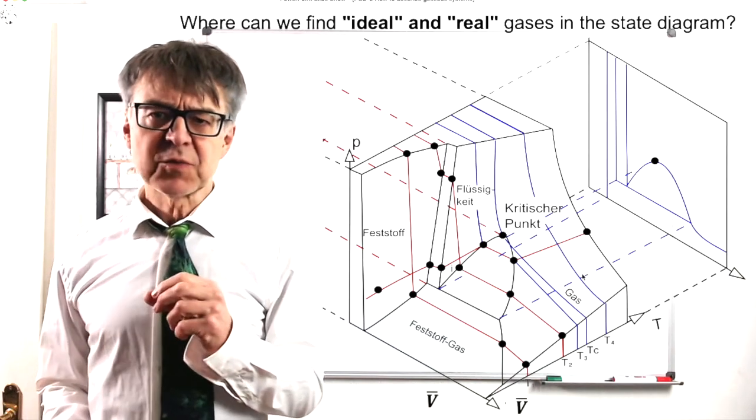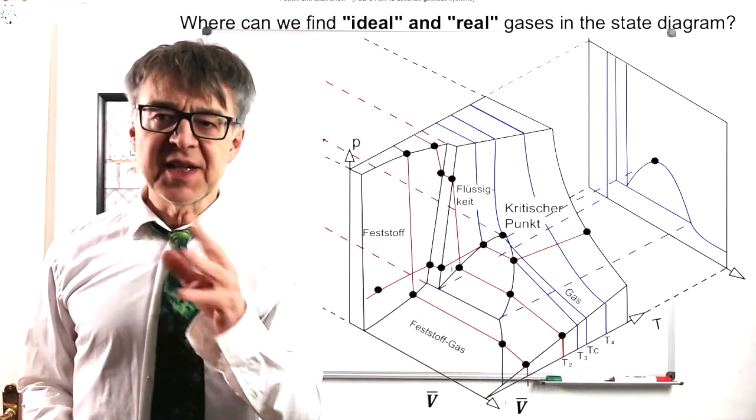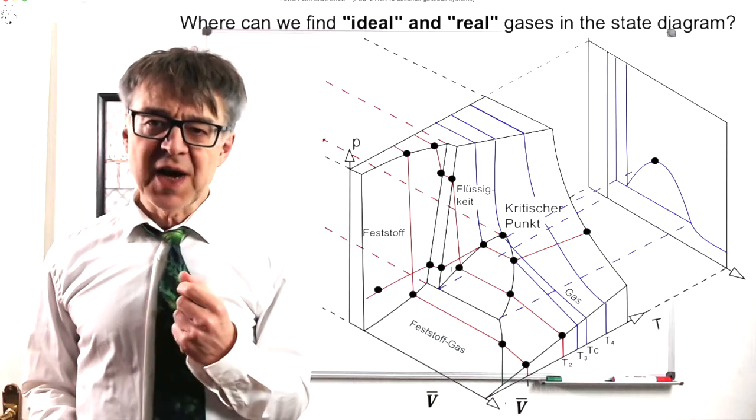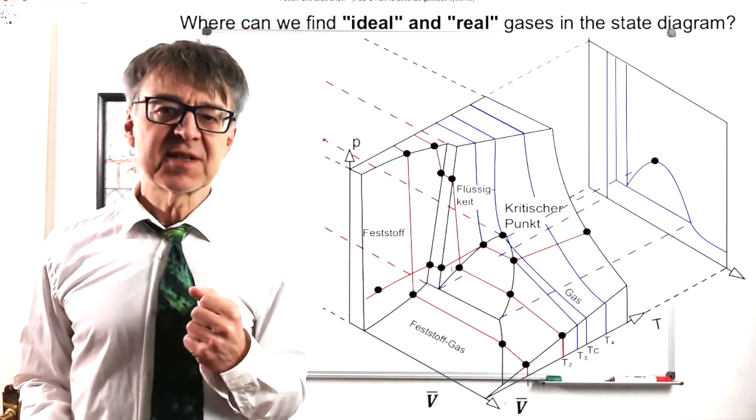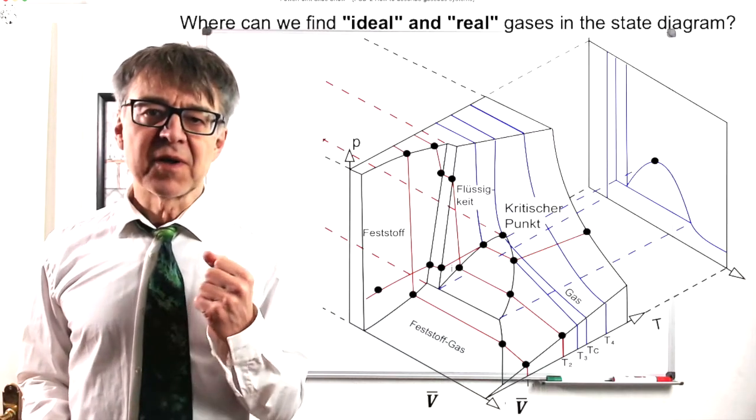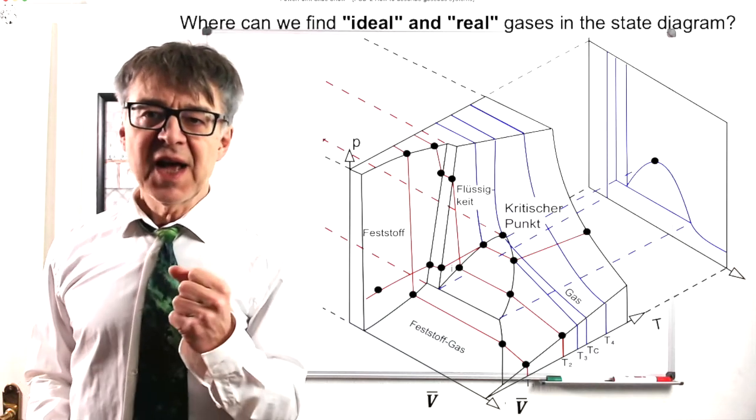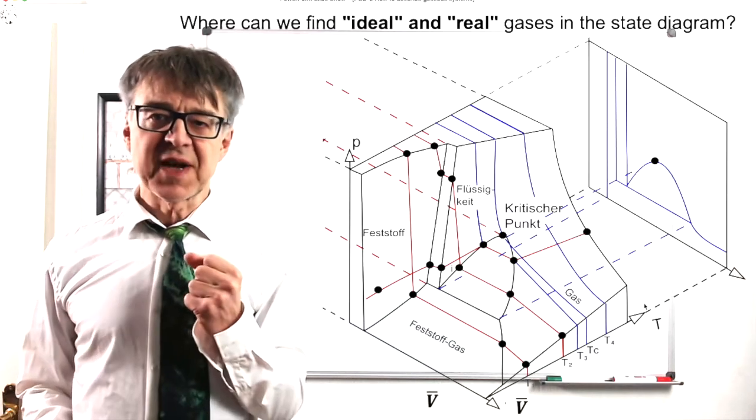In physical chemistry, we often focus on ideal behavior, which is easy to describe. Deviations from this ideal state is then referred to as real and needs some mathematical correction factor.